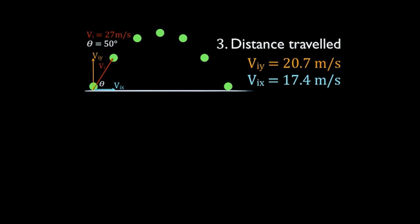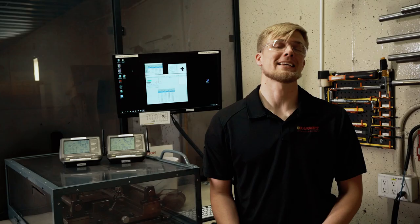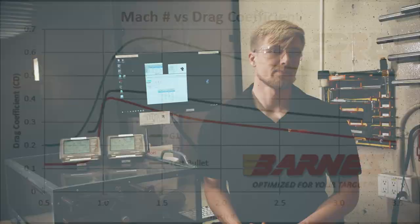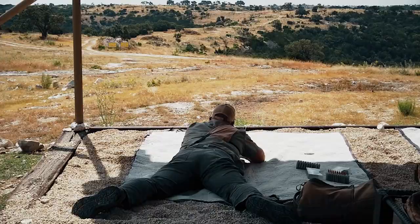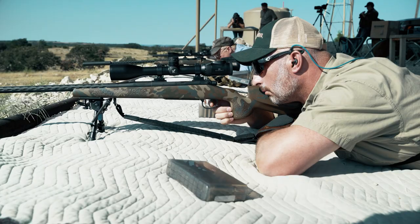Luckily for us, we have ballistic calculators. With your ballistic calculator, it's very important to know your BC, or your ballistic coefficient. A BC value is the bullet's ability to overcome air resistance during its flight — in other words, it's a parameter describing how quickly a bullet loses its velocity in flight. A high BC bullet is going to lose less velocity than a lower BC bullet. From zero to 300-400 yards, this doesn't make as big of a difference, but when you go beyond 300-400 yards, the effects are amplified.